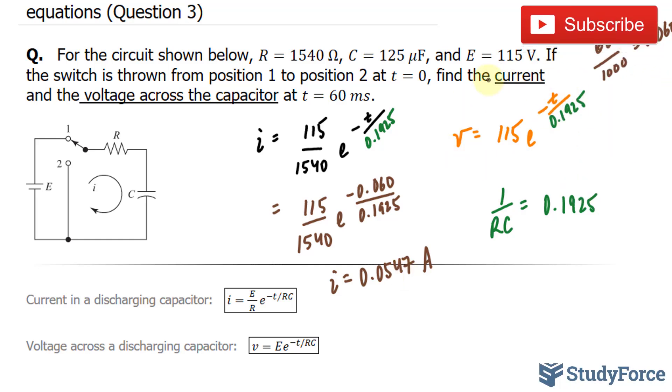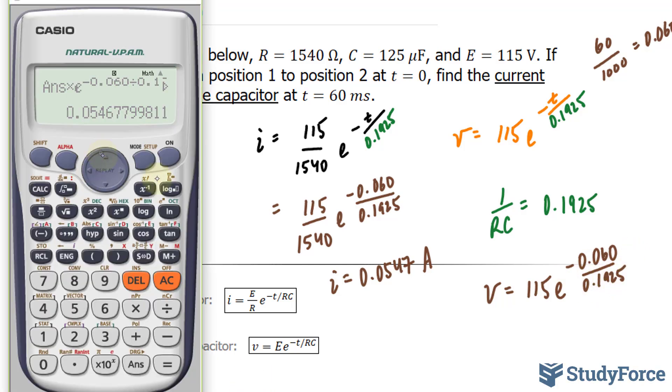Now we'll do the same thing for this calculation. We have V is equal to 115 times E to the power of negative 0.060 over 0.1925. Using our calculator, starting off with 115, we multiply that by E to the power of negative 0.060 divided by 0.1925.